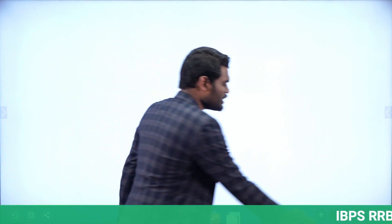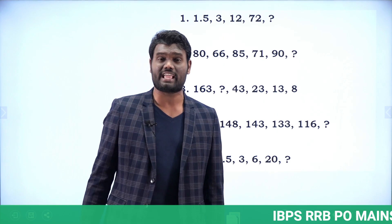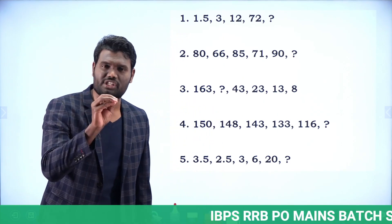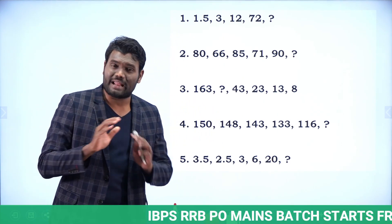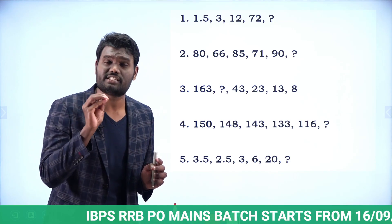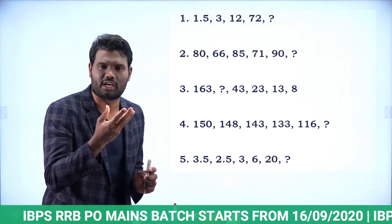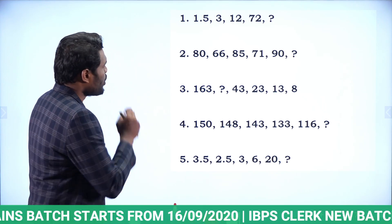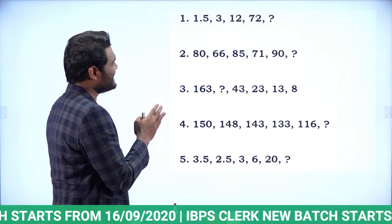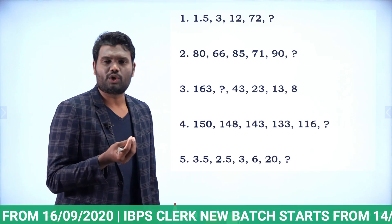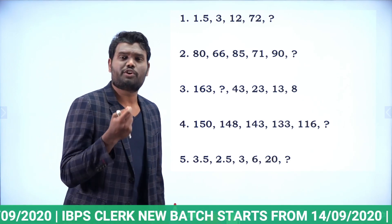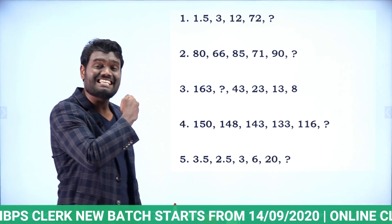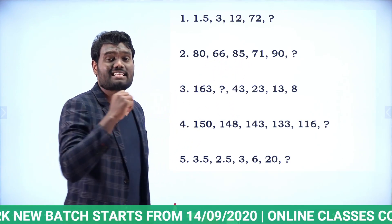What you all need to do is observe the approaches. I am not going to explain the complete concept — you need to observe the approach here. Let's look at the first question: 1.5, 3, 12, 72, and question mark. The series is gradually increasing.